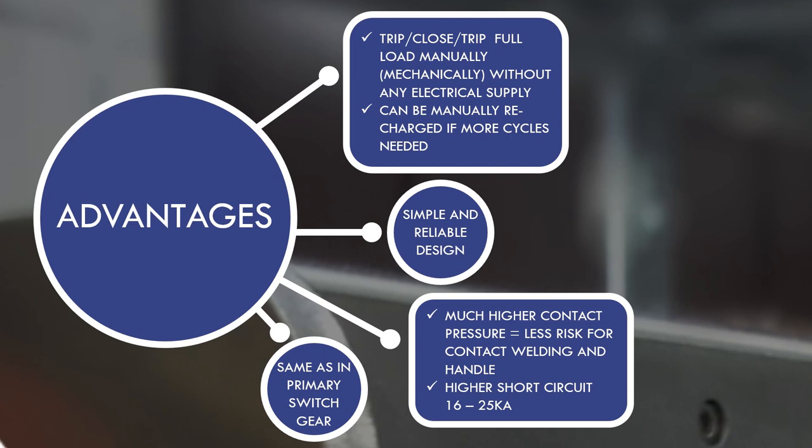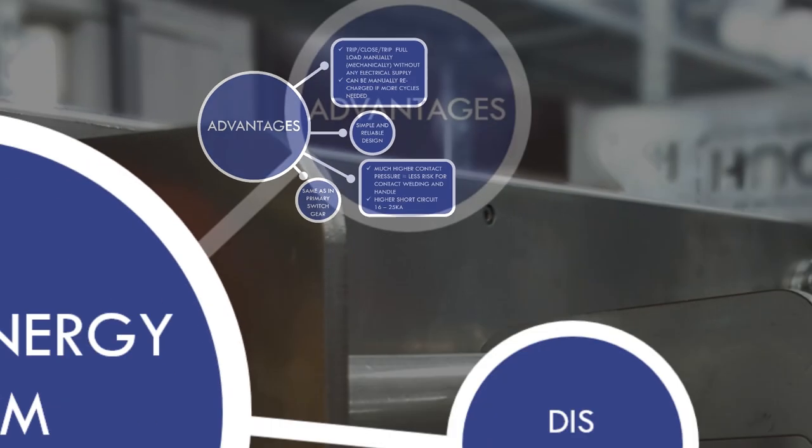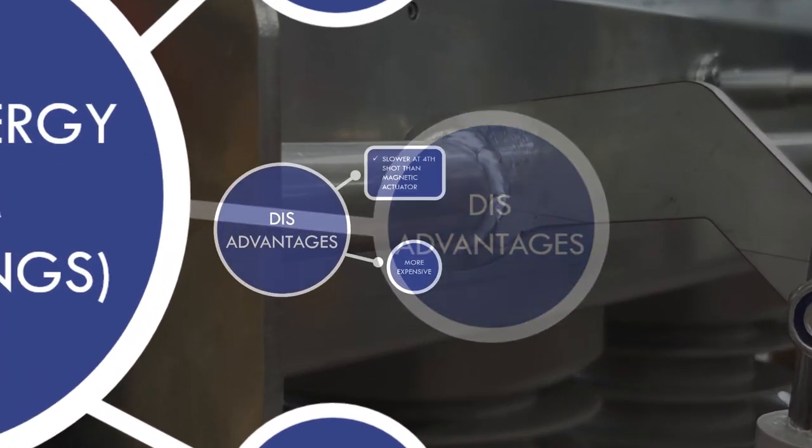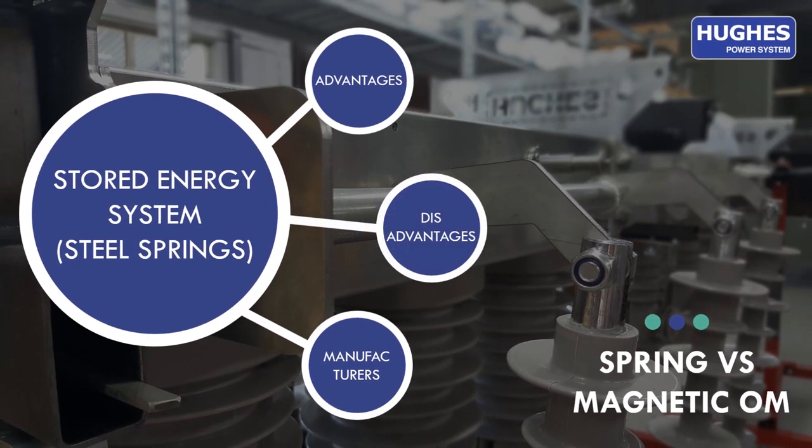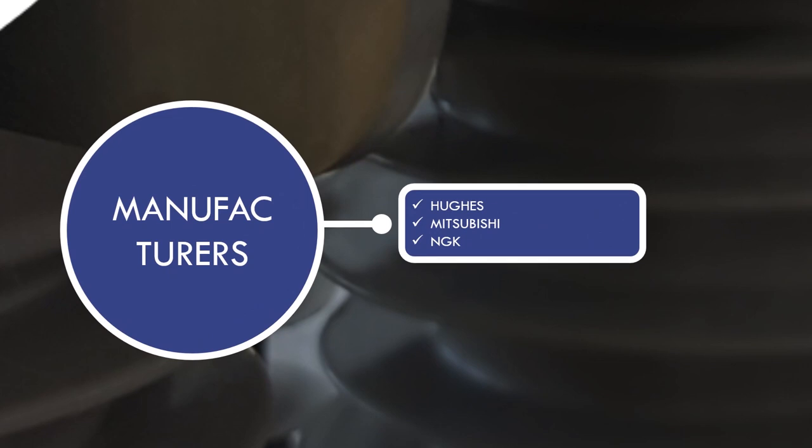If you look at the primary substation breakers, they use the same spring mechanism due to its proved reliability and much higher contact force. Moving next to the disadvantages, the stored energy mechanism is normally a little bit slower, about four shots, than a magnetic actuator as it needs to recharge automatically its springs. This type of mechanism is also more expensive than others. The manufacturers that are using spring mechanisms in their reclosers are Hughes, Mitsubishi, and NGK.